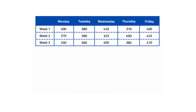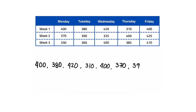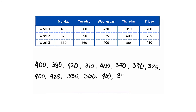What is the mode in Romi's record of earnings? Looking at all values — 400, 380, 420, 310, 400, 370, 390, 325, 400, 425, 330, 360, 400, 385, and 410 — the value 400 appears four times, making it the most frequent. Therefore, the mode of Romi's earnings is 400 pesos. The data is unimodal.